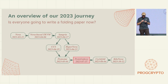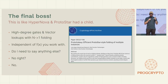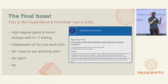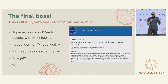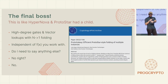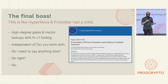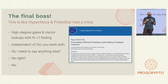After that, Ariel Gabizon and Liam Eagen basically came up with Protogalaxy. To me, Protogalaxy was like Hypernova and Protostar just had a child, and the child was so lucky it got the best of both worlds: N-to-one folding, high degree gates, vector lookups, independent of F(X) so you can put CCS or whatever you want there. I don't think I need to say anything else. This was really, really nice.